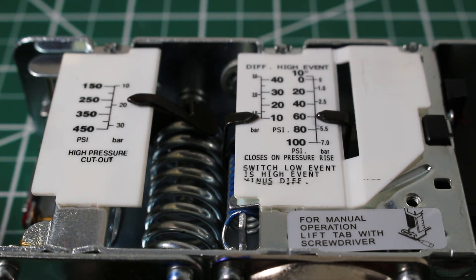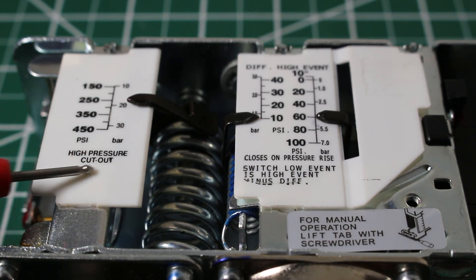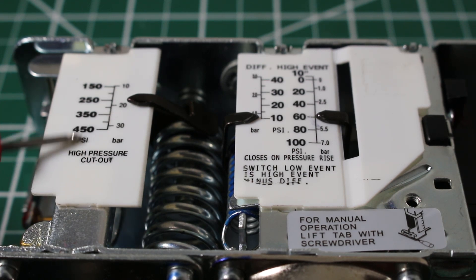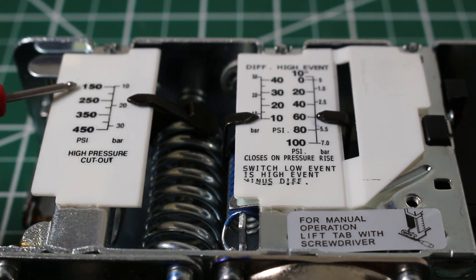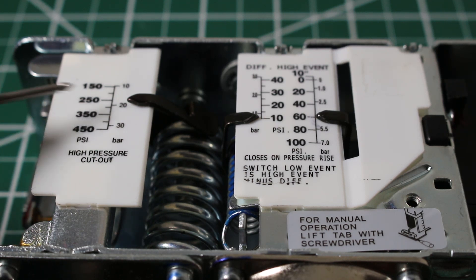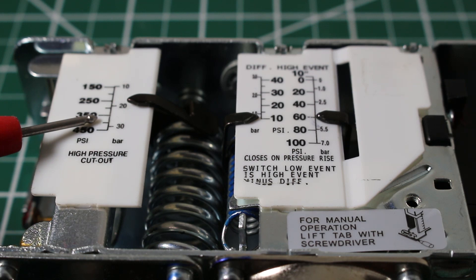Alright, let's start with the left side. As you can see, it says high pressure cutout, so this is our high pressure control. Here is our tab and we have a range from 150 to 450 and we just adjust our tab to the pressure we want our system to shut down at if it ever reaches those pressures.